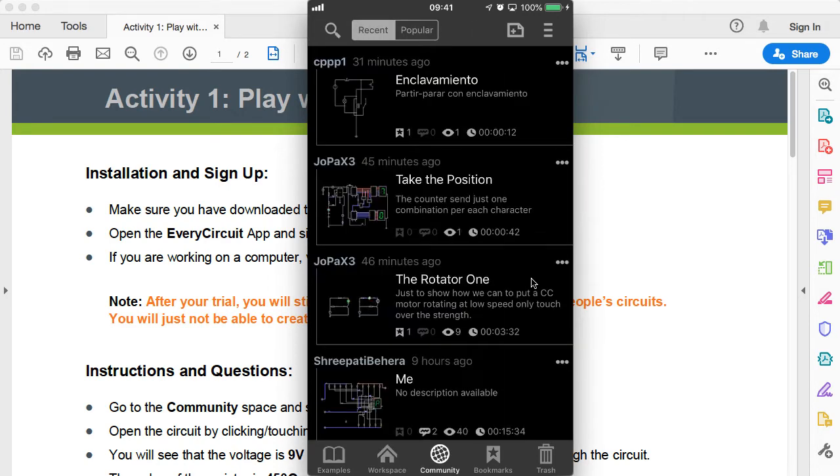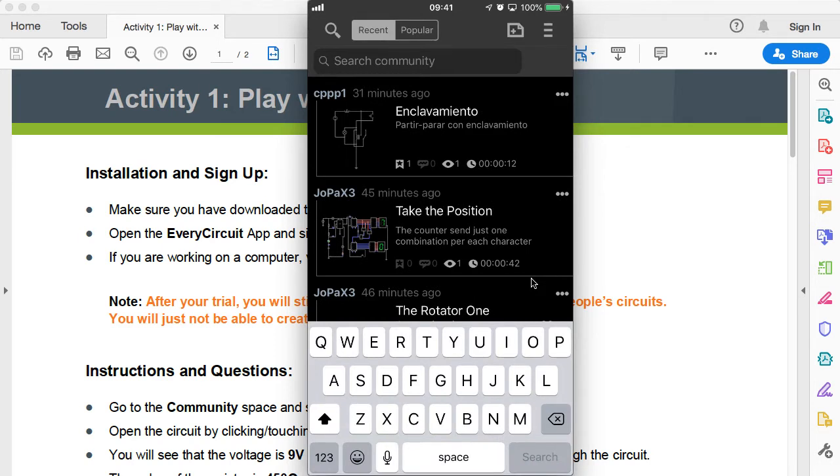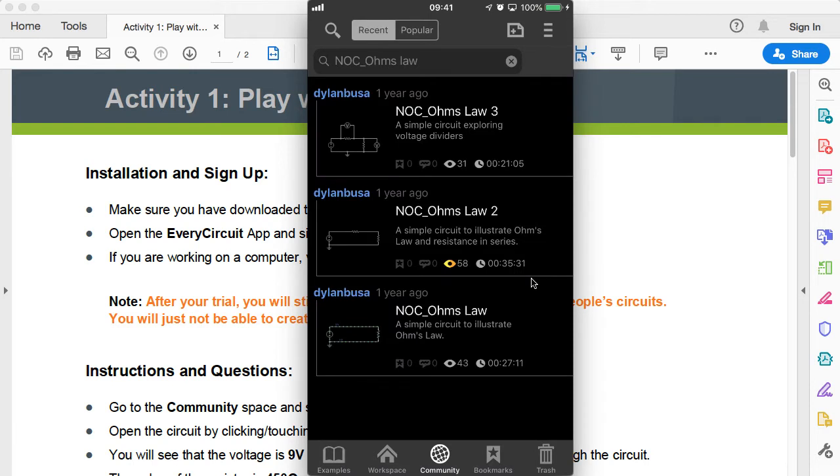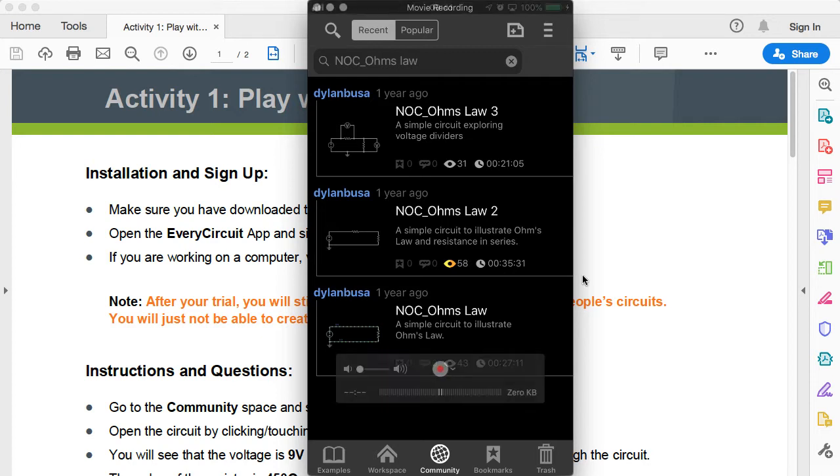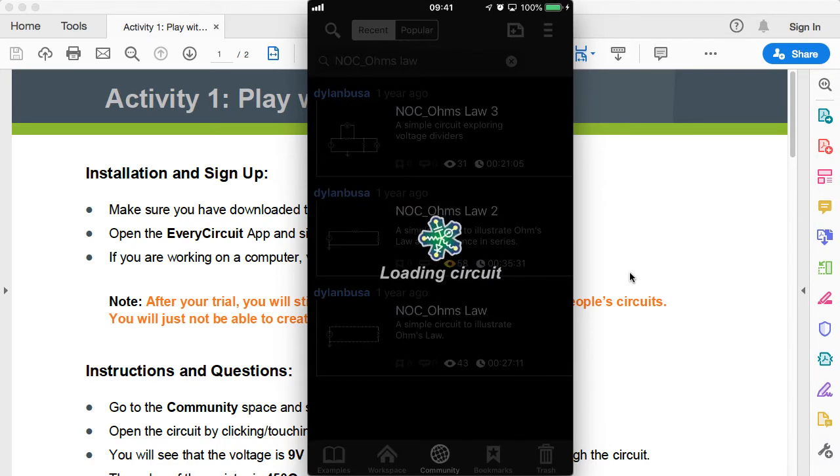In order to interact with the circuits in the examples we need to go to the community space. Click on the community icon down in the bottom tray and then we're going to need to search for a particular circuit. This time we need to search for the circuit called NOC underscore Ohms Law. This will bring up all the results for that search and this is the circuit here at the bottom that we need to use. Just touch on that circuit icon and it will open up the circuit for you.